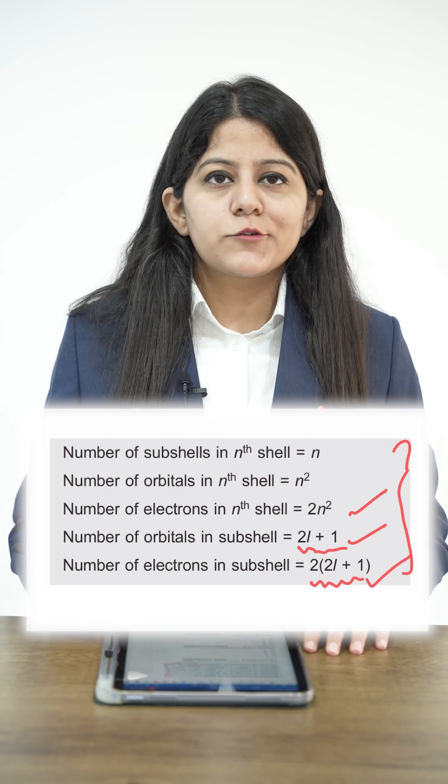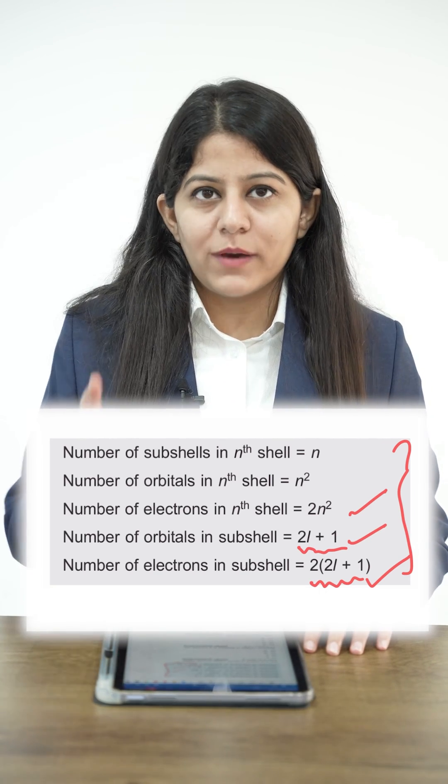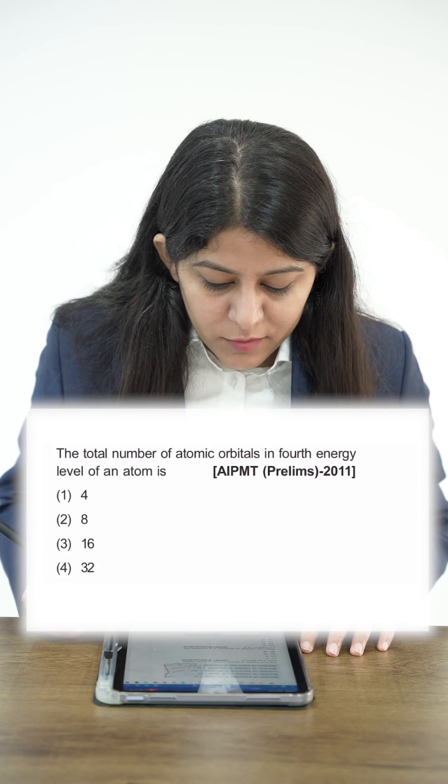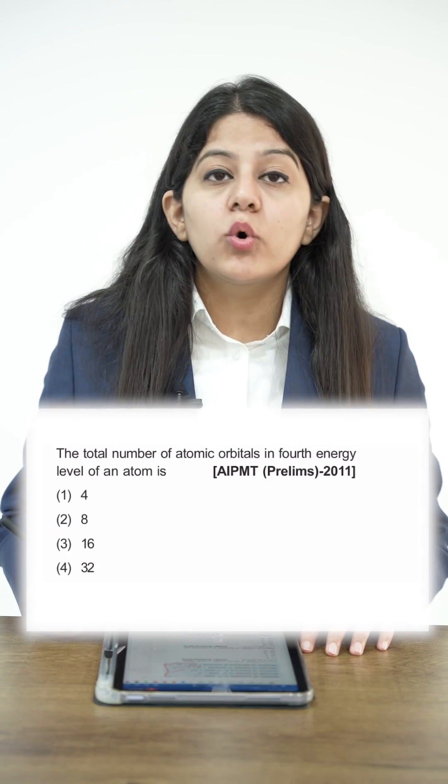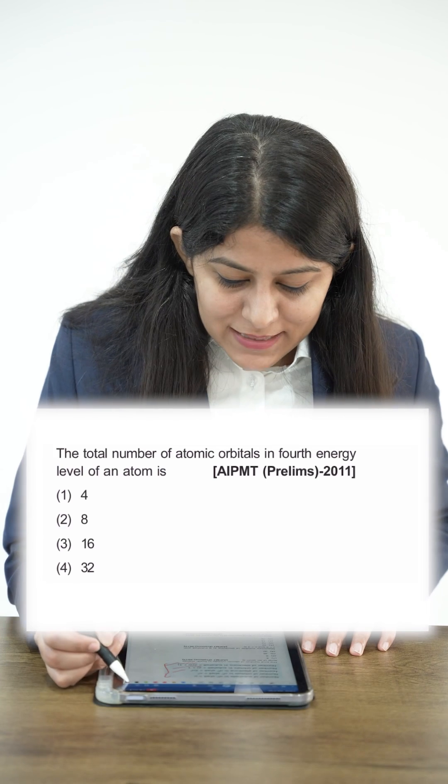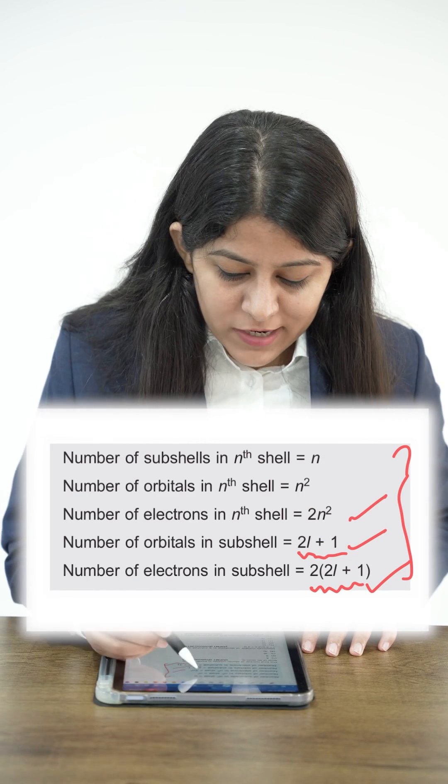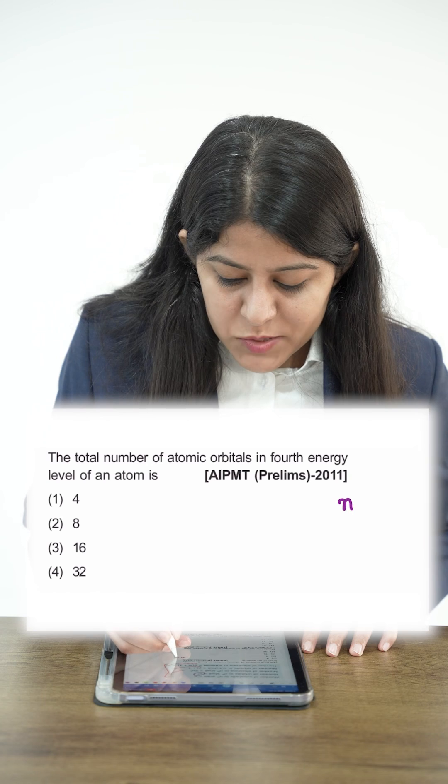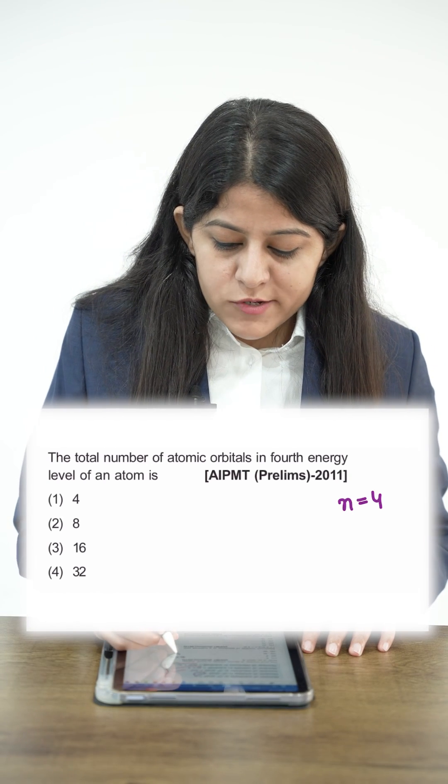Now let's see a question: the total number of atomic orbitals in the fourth energy level. Number of orbitals in nth shell is n². Fourth energy level means n=4, so orbitals equals 4² which is 16. Our correct answer is 16.